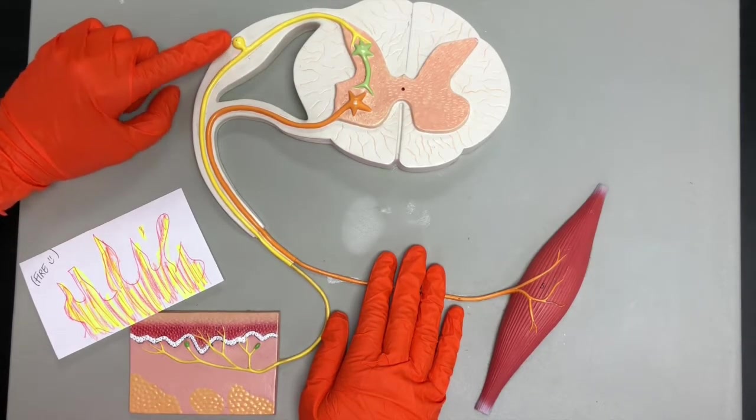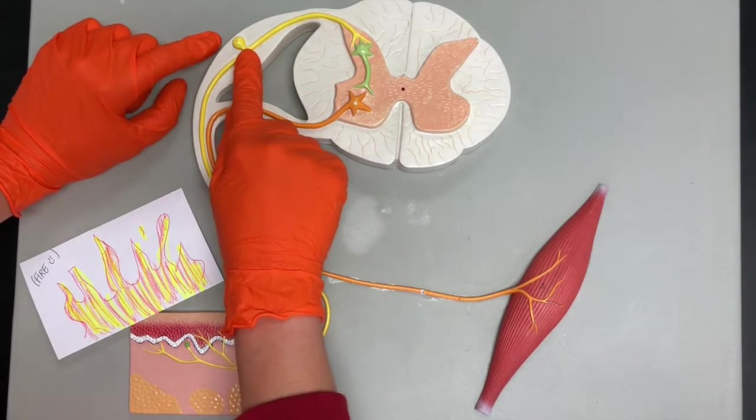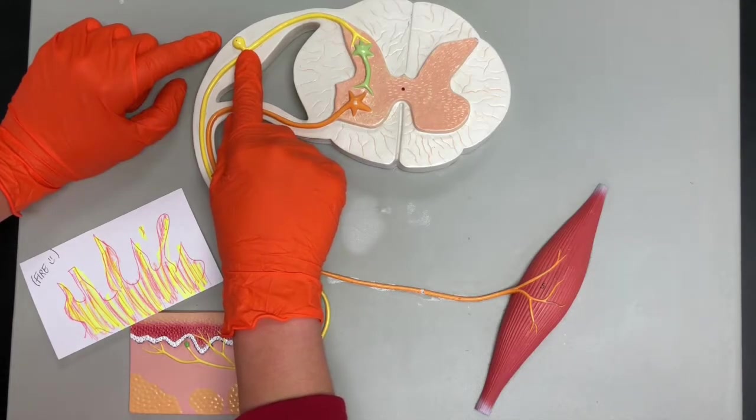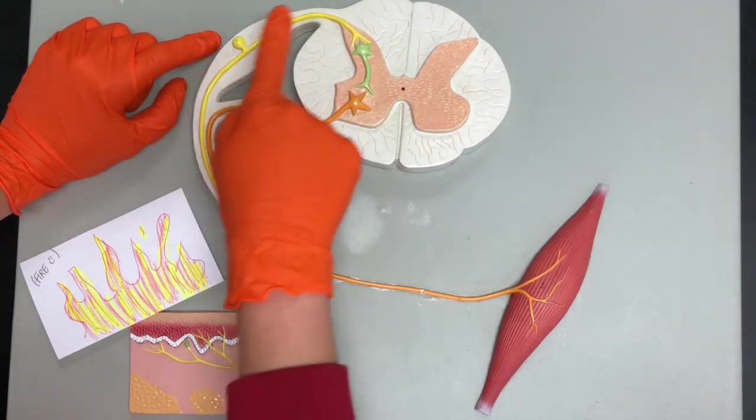Looks like a unipolar neuron. So if you look at this neuron right here, there's one cell body, one process coming off of that. And so this is a unipolar neuron, a sensory neuron.